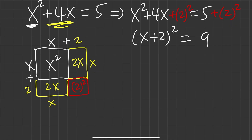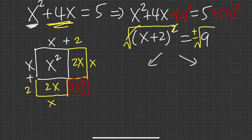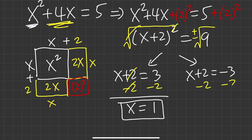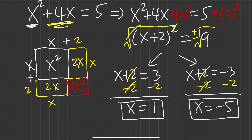Take the square root of both sides — plus or minus. Square root of 9 is 3, a nice number. Breaking into two equations: x plus 2 equals 3 gives x equals 1, and x plus 2 equals negative 3 gives x equals negative 5. So our two answers are 1 and negative 5. Even though negative 5 may not make sense geometrically, algebraically both answers are valid.